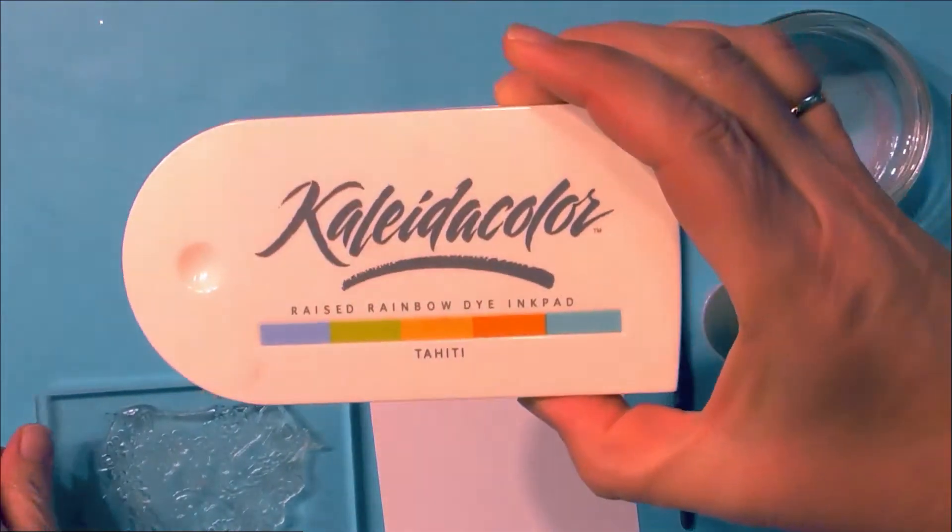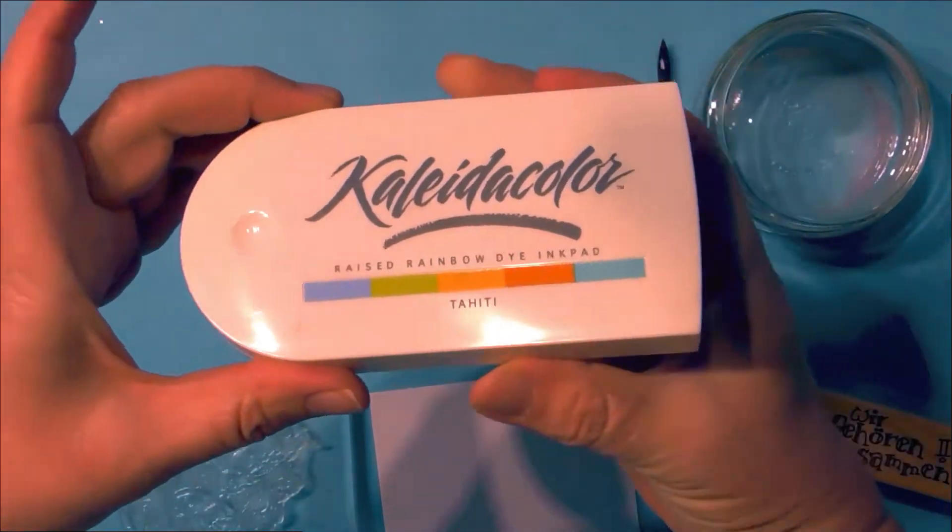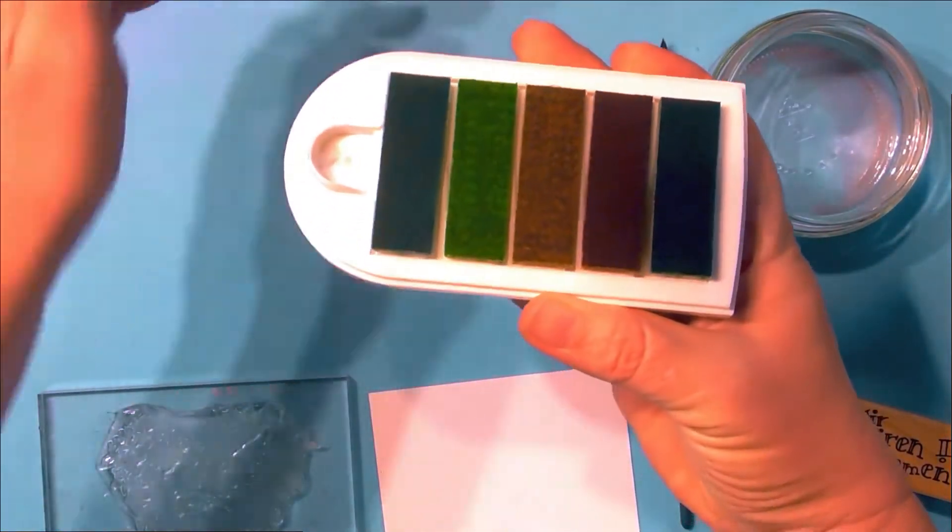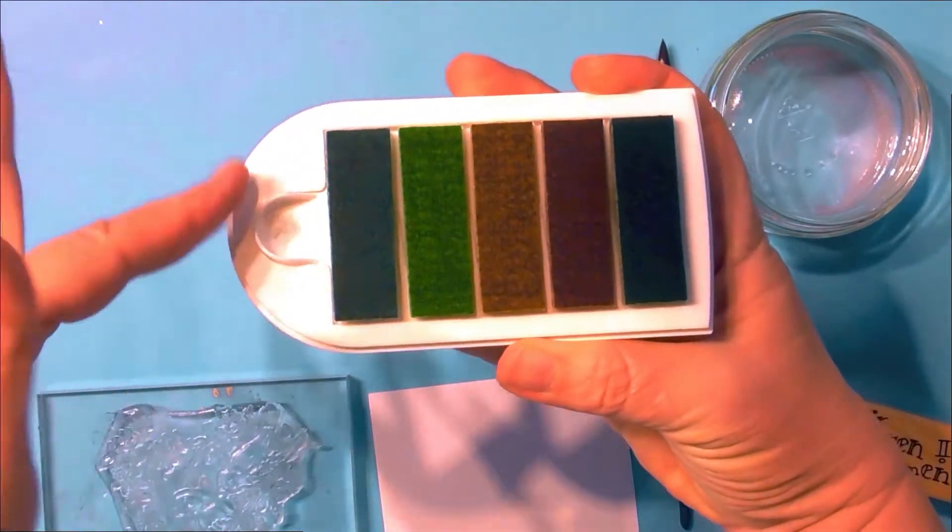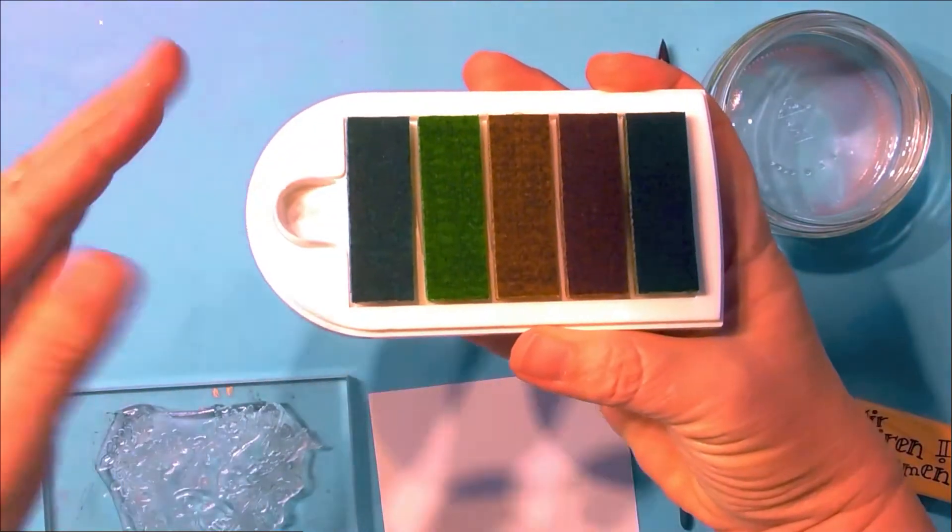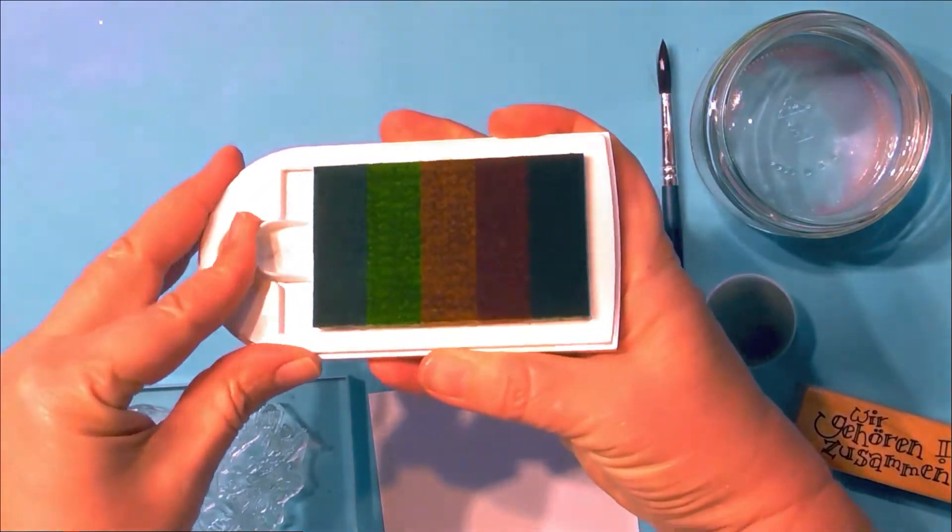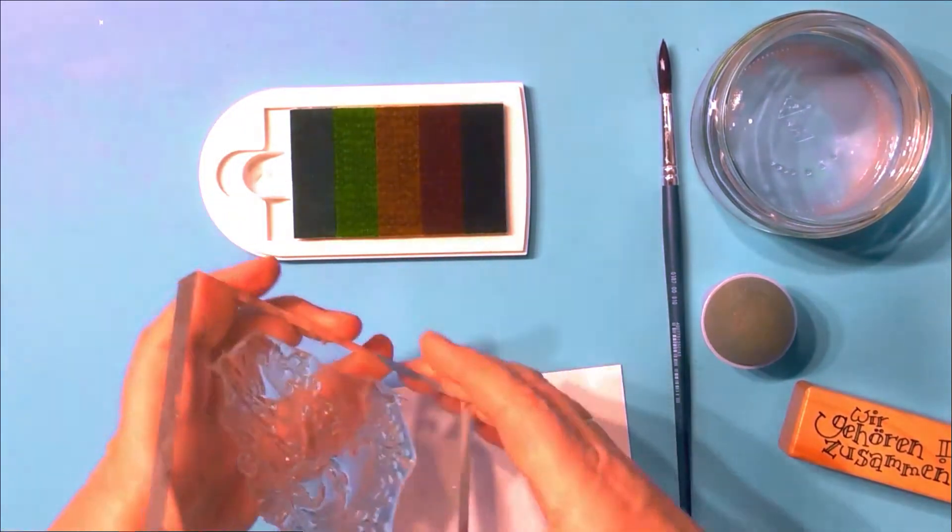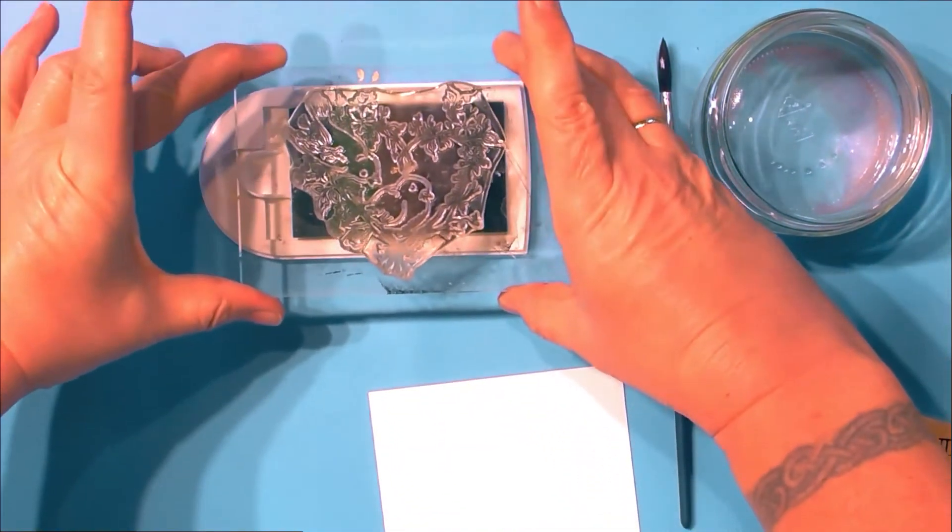Then I ink my stamp with the Kaleidacolor ink. It's a rainbow ink pad that you can use. Before you can use it, you have to push the segments together, but because you store it like this when the segments are separated, you prevent the ink from smudging.